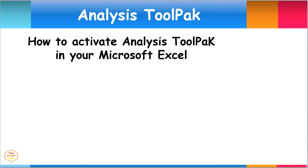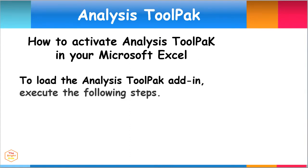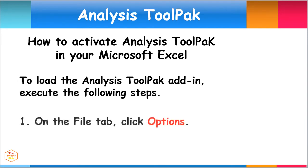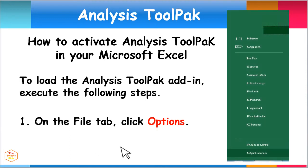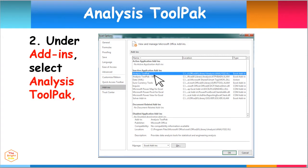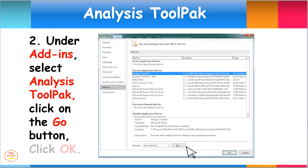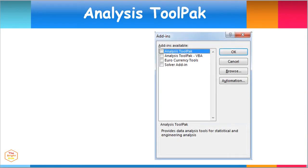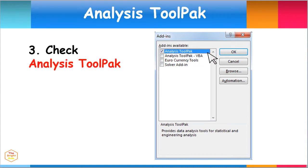Since variances are unequal, we will use the t-test for two samples assuming unequal variances. To conduct the t-test, make sure the Analysis ToolPak is activated in your system. To load the Analysis ToolPak add-in, on the File tab click Options. Under the Add-ins menu, look below the inactive application add-ins, select Analysis ToolPak and click the Go button. When the dialog box appears, make sure to check the Analysis ToolPak tick box and click OK.